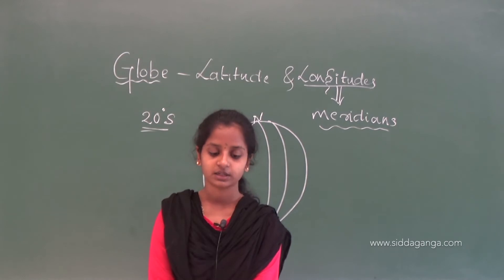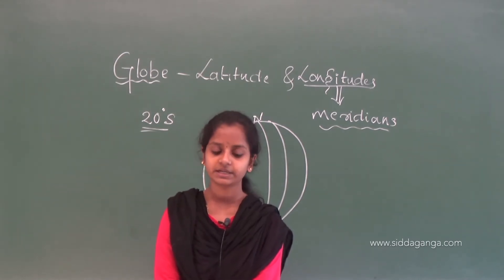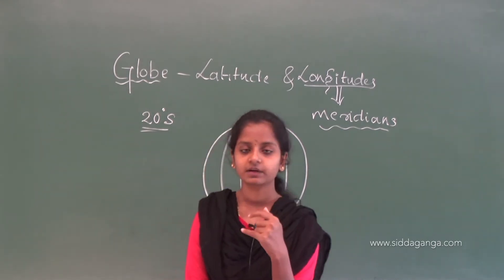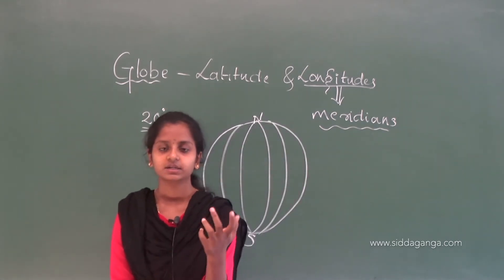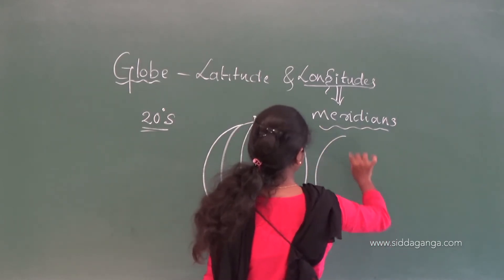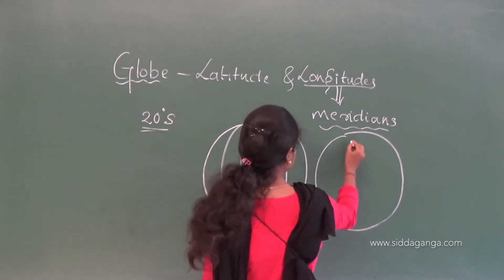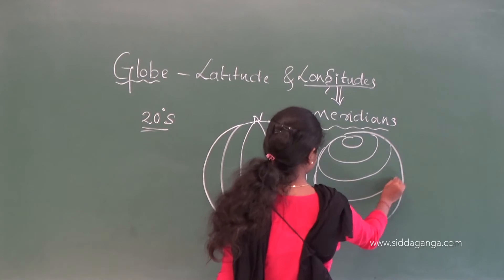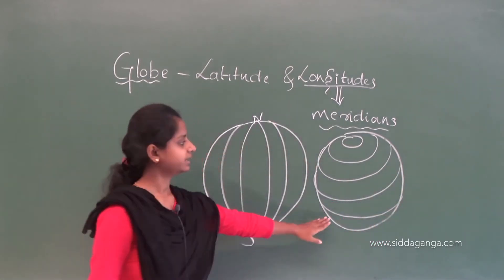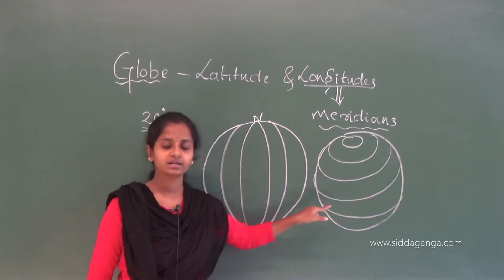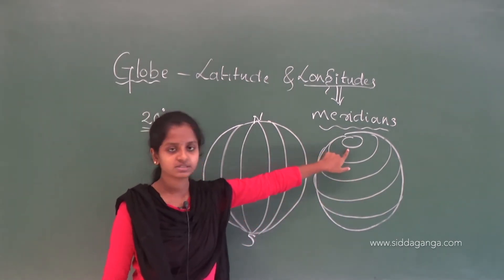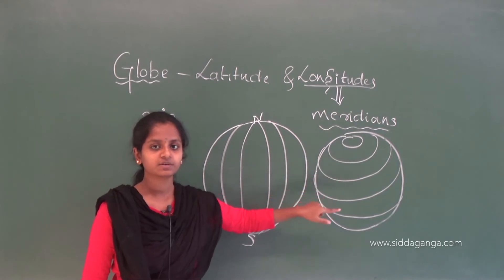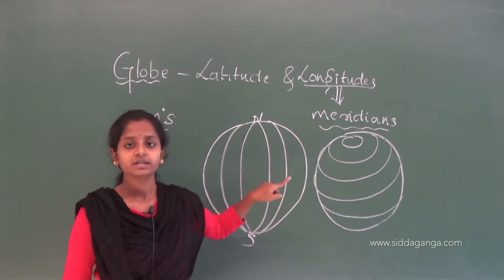Unlike the parallels of latitude, all the meridians are of equal length. In parallels, the length of those parallels differs — smaller near the poles, bigger near the equator. But the distance between the parallels remains the same.